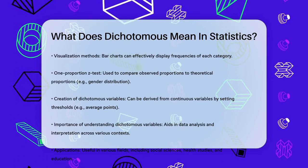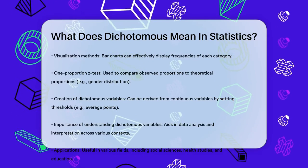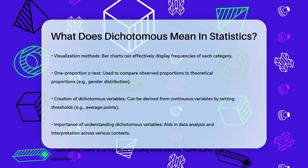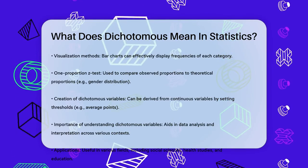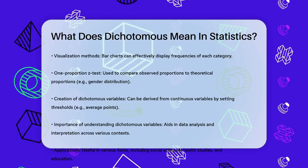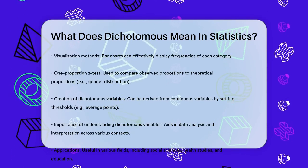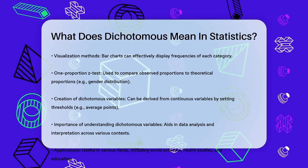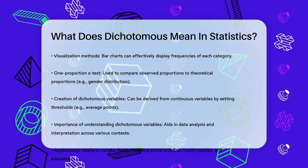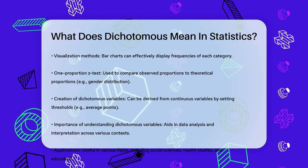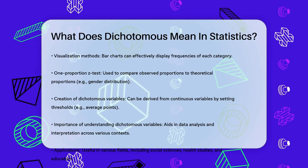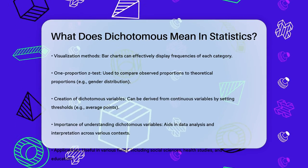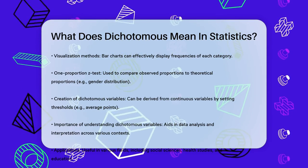Sometimes you can create a dichotomous variable from a continuous variable by setting a threshold. For example, you could turn the continuous variable of average points into a dichotomous variable by classifying players with an average above 15 as high scorers and those below 15 as low scorers.